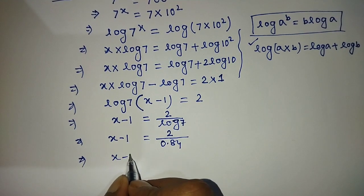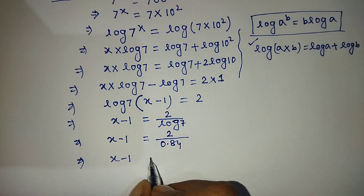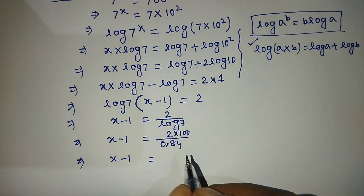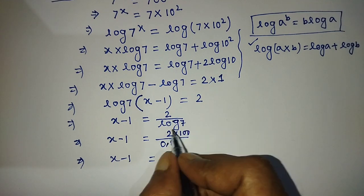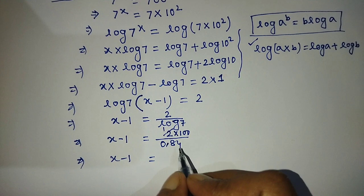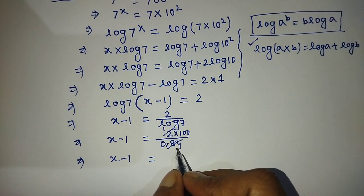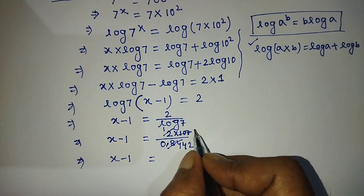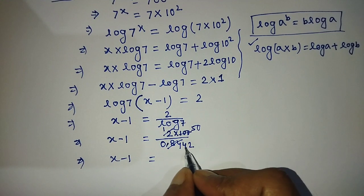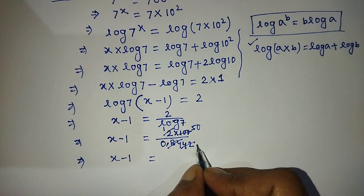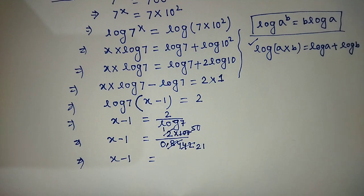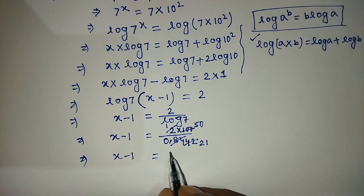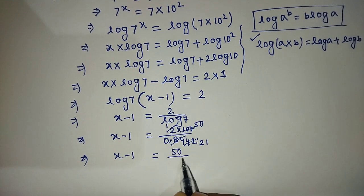We simplify the fraction 2 over 0.84. Dividing both numerator and denominator by 2: 2 divided by 2 gives 1 in the numerator (so numerator becomes 2), and 0.84 becomes 0.42. Writing as whole numbers: 200 over 84, then dividing both by 2 gives 100 over 42, then 50 over 21. So on the right hand side we write 50 over 21.